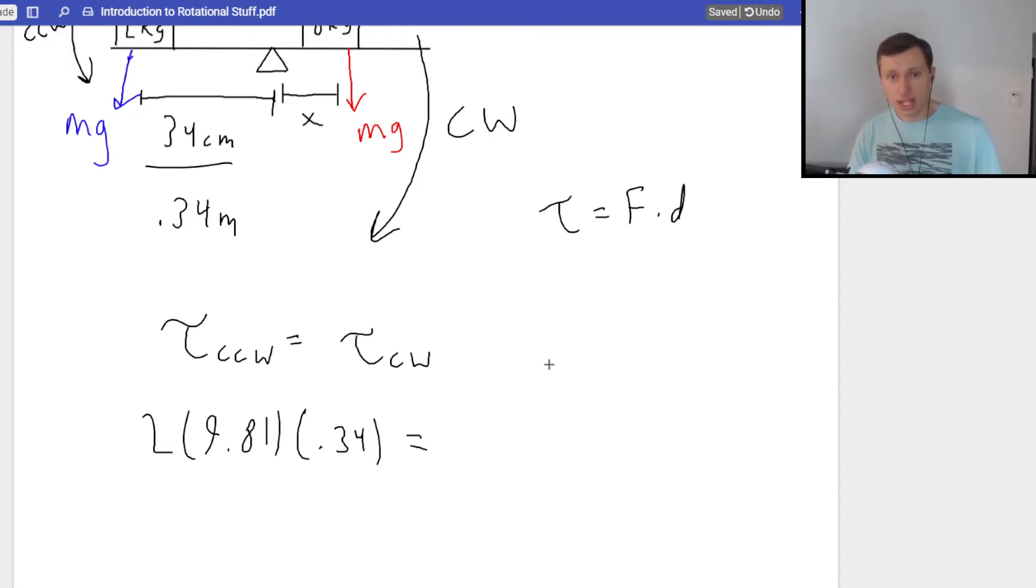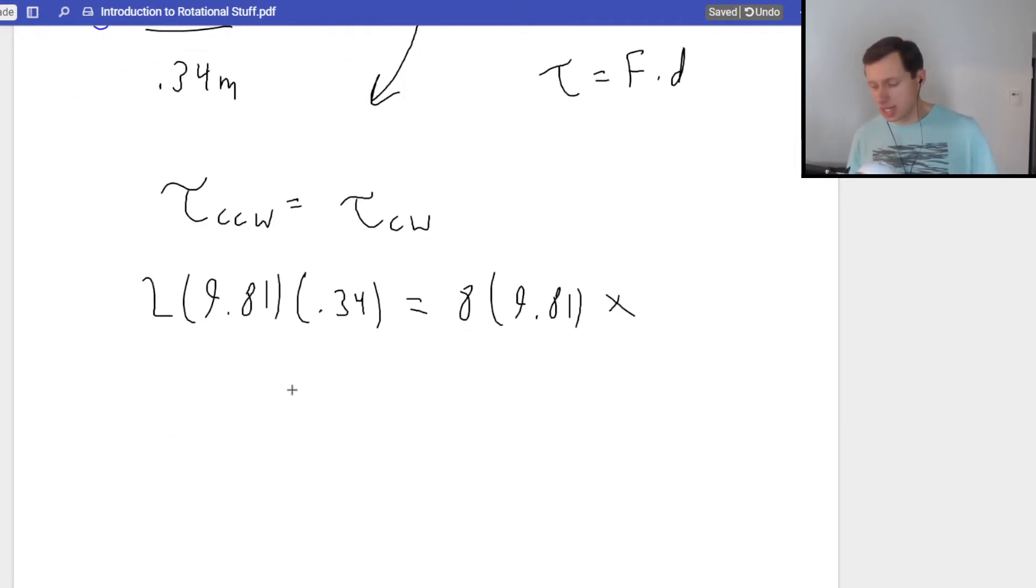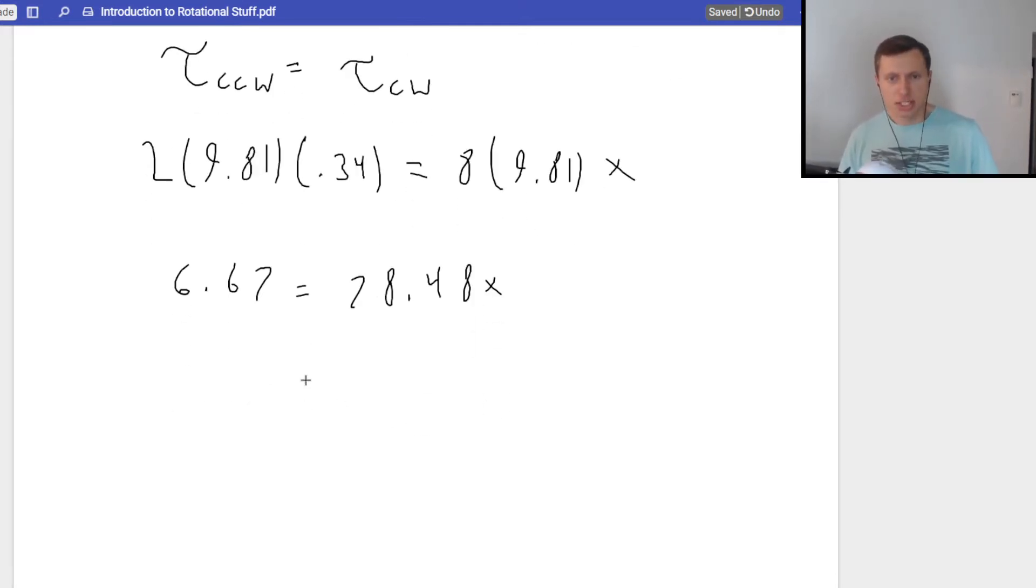That's the left side. The right side, that's going to be 8 kilograms, so 8 is m, times g is 9.81, and then that radius is x. That radius is just x. We're solving for x, right? So notice here, we pretty much have all the math. So I'm just going to say 2 times 9.81 times .34 on the left. That's going to give me 6.67 is equal to 8 times 9.81. That's going to be 78.48 on the right, or 78.48x.